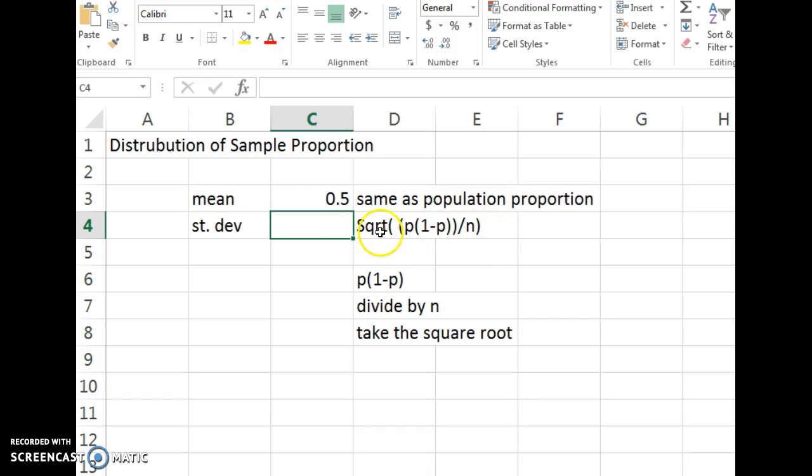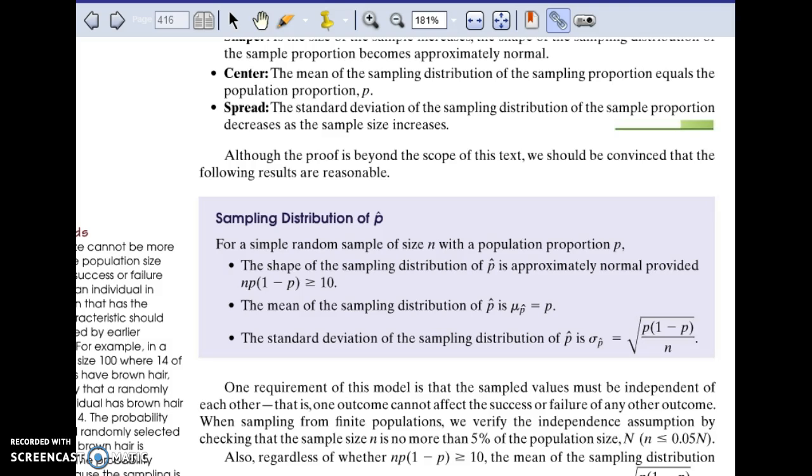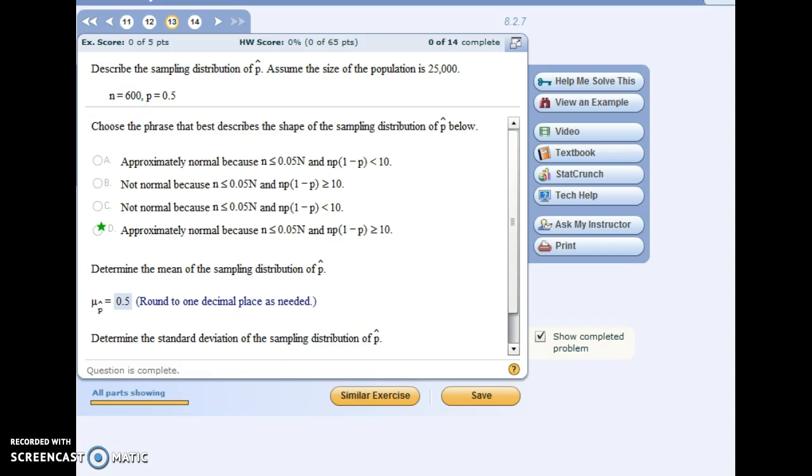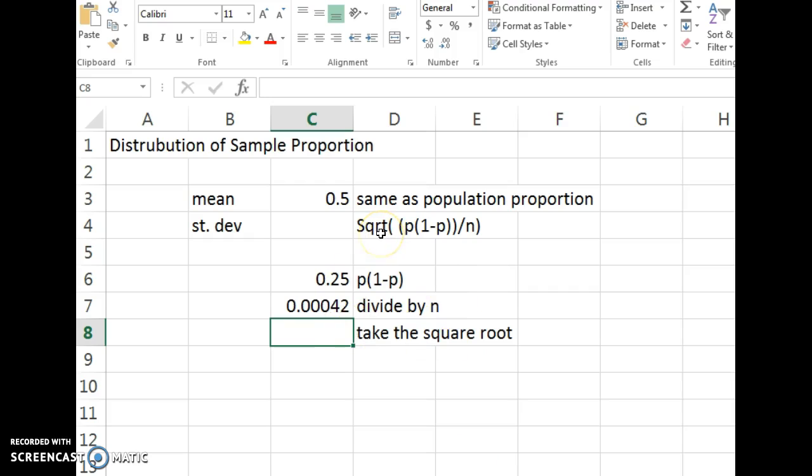If you try to type it all the way in in Excel, you'd have to do this complicated formula. So I suggest breaking it up. We're going to do our proportion value multiplied by 1 minus that same value. And then the formula says to divide by n. So we're going to take that result we just got, c6, and we're going to divide by 600. And I did 600 because n is 600. And then the final thing to do in the formula is take the square root. So I'm going to take the square root of that result I just got. So that's the value you get for the standard deviation.